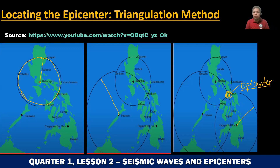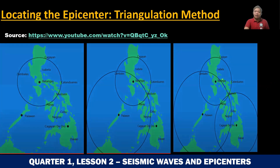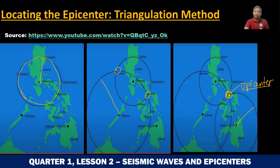That is the triangulation method. You can't use only two seismic stations because there will be two intersections and you can't really identify which one is the epicenter — it could be Zambales, it could be Masbate. That's why you need three circles so that there will only be one intersection, and that single intersection of the three circles is the epicenter of the earthquake. If you want to know more, you can visit a website or YouTube to learn how to compute and locate the epicenter using the triangulation method.